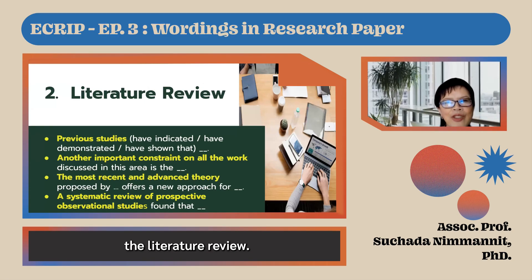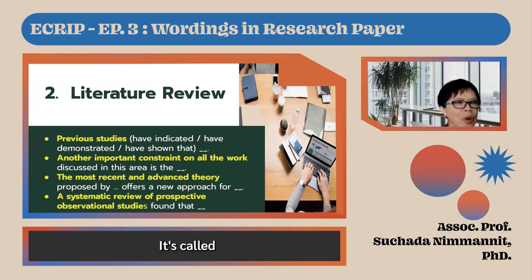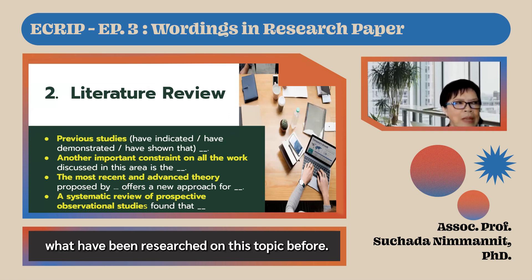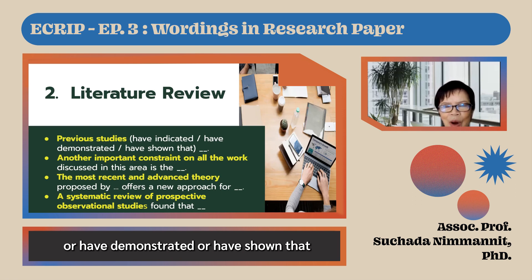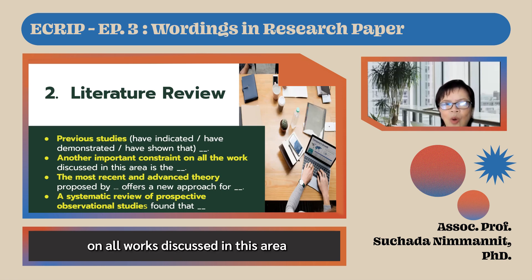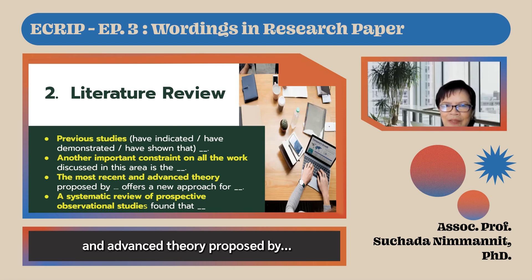Next, the literature review. In this section, sometimes called the review of relevant literature, the researcher talks about what has been researched on this topic before. He might say: 'Previous studies have indicated, demonstrated, or shown that…', 'Another important constraint on all works discussed in this area is the…', or 'The most recent and advanced theory proposed by… offers a new approach for…'